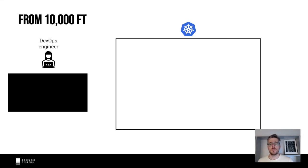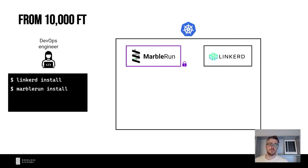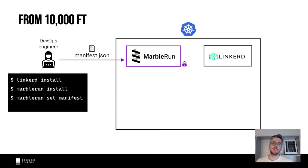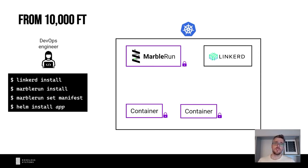From a 10,000-foot view, this is what the workflow looks like when you install MarbleRun. You start with an empty Kubernetes deployment, install your favorite service mesh — for example Linkerd — then install MarbleRun using the MarbleRun CLI. The next very important step is defining a file called the manifest, where you specify in JSON all the confidential computing-specific aspects of your deployment. The final step is installing your app as normal. If you packaged your app with EGo, your containers will automatically contact the MarbleRun coordinator over secure, mutually attested TLS connections, and MarbleRun will ensure these containers adhere to the manifest.